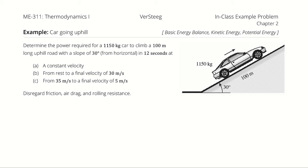In the first situation, we are considering a constant velocity across the entire process. In the second situation, the car goes from rest at the bottom of the hill to 30 meters per second at the top. In the third situation, the car starts at 35 meters per second and ends at the top of the hill at 5 meters per second.